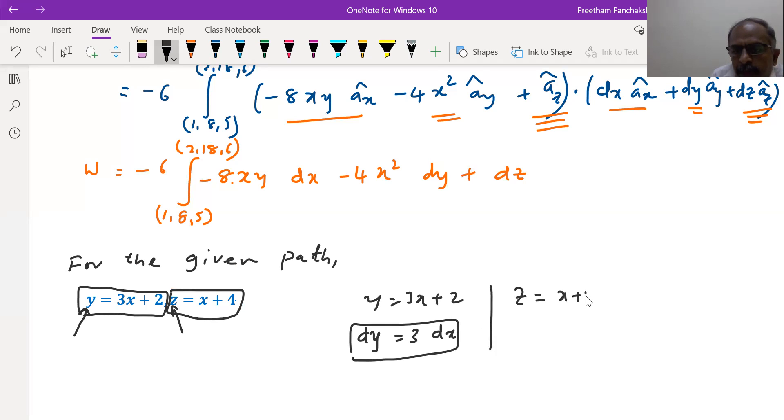To differentiate z, it is dz. x becomes dx. The differentiation of 4 is 0. So using these four relations in the expected equation, we can introduce the path.